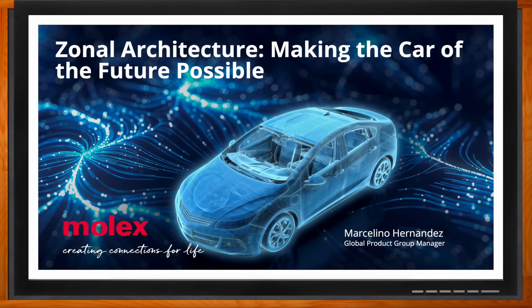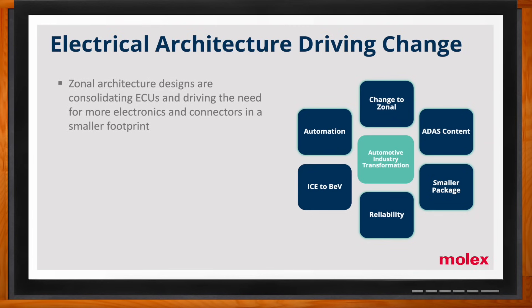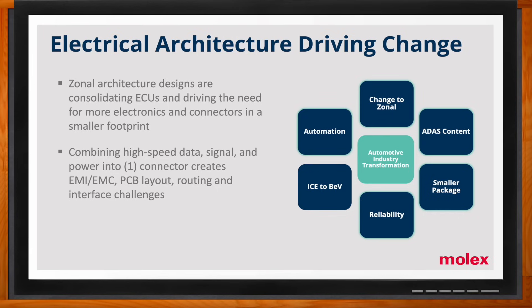We're talking about zonal architecture and how this kind of architecture is making the car of the future possible. What kind of trends are you seeing pushing this need for zonal architectures? There's not a single trend that is driving it — it's multiple trends heading into the same direction. There's a trend of increased driver assistance, ADAS, at different levels. There's a trend to increase high technology content for cameras, lidars, and radars that will enable those types of vehicles. There's also the trend to simplify how the vehicle is built. All these different trends are merging into the need of having a different way of designing and building these vehicles.